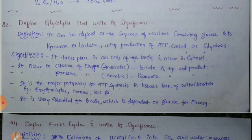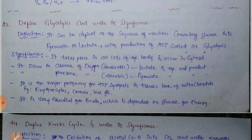Significance: Glycolysis takes place in all cells of the body and occurs in the cytosol. It occurs in the absence of oxygen, where lactate is the end product, and can also occur in the presence of oxygen (aerobic condition), where pyruvate is the product. Glycolysis is the major pathway for ATP synthesis in tissues.